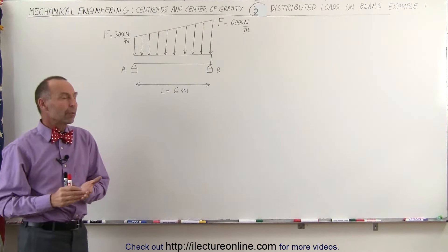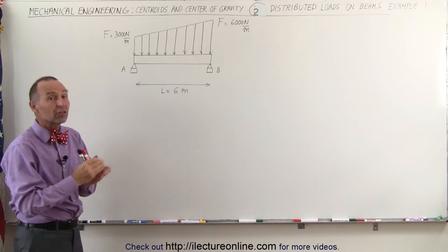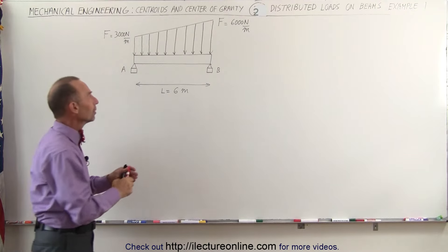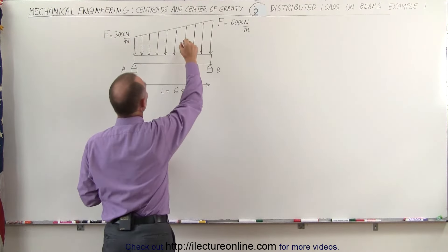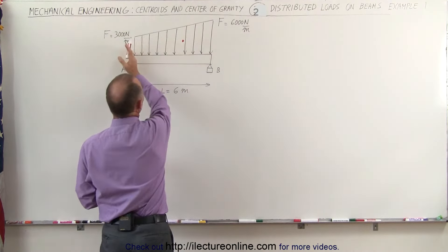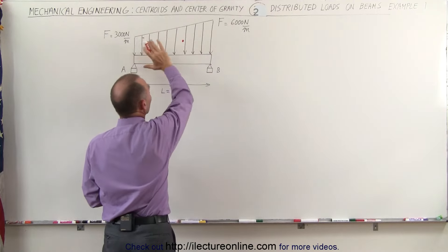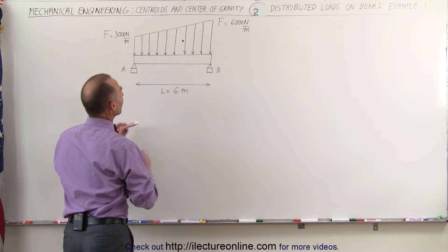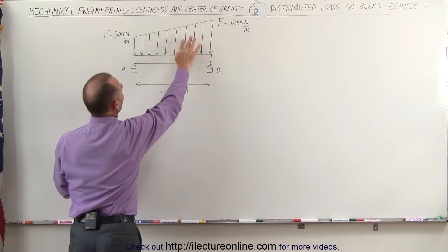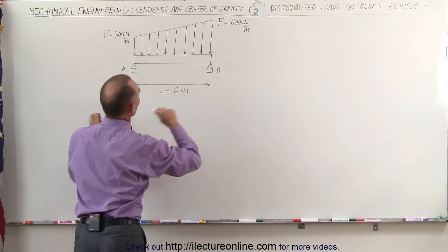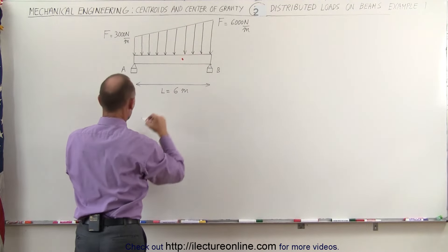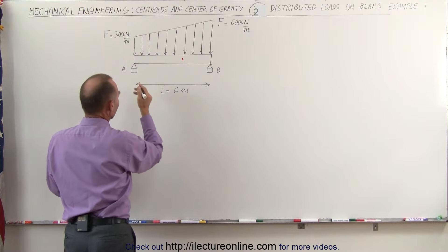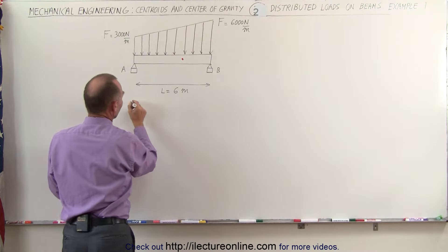In order to solve this problem, we need to find the centroid of that distributed load — the point as if all the force is acting at that one single point. We can assume that point is somewhere more to the right than to the left, because the force increases as we go to the right. We need to find that distance from point A.